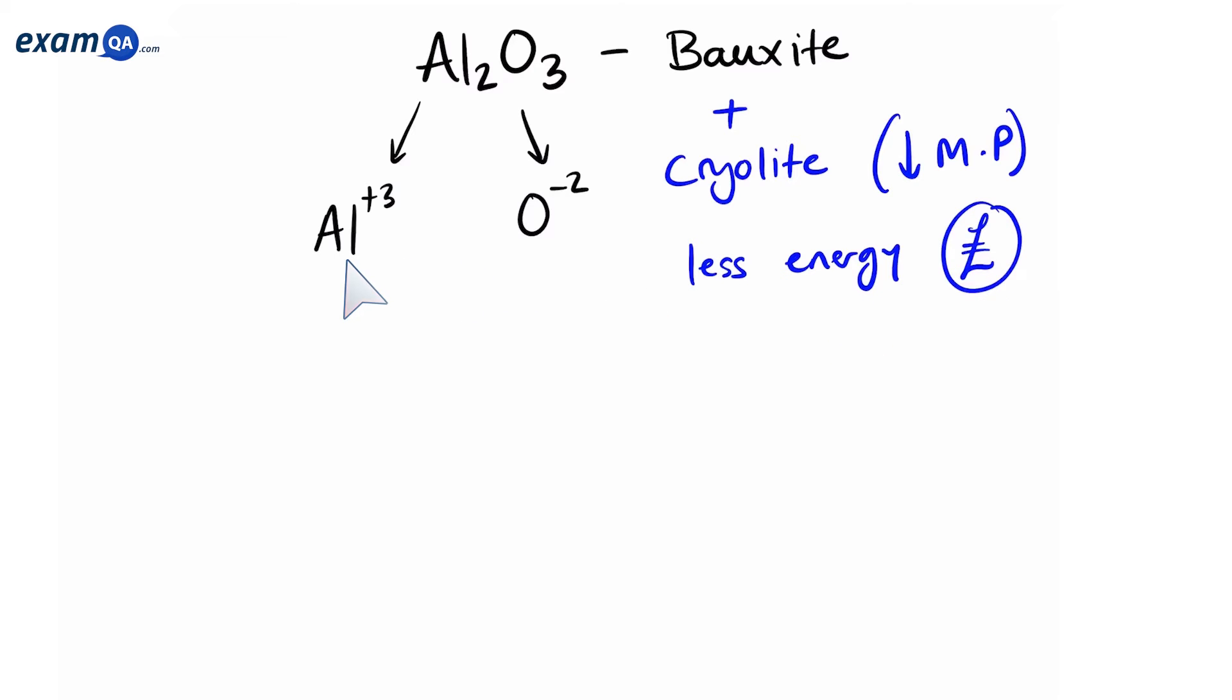Aluminium forms three plus ions, whereas oxygen forms minus two ions. To find out why this happens, watch our video on the periodic table. In short, aluminium is in group three, so it loses three electrons, whereas oxygen is in group six, so it gains two electrons.